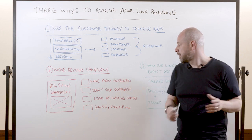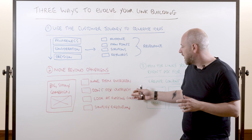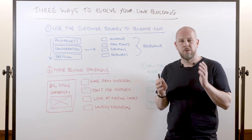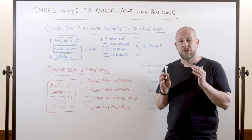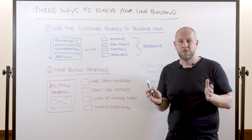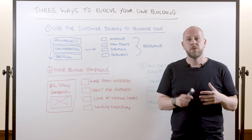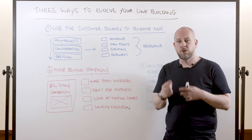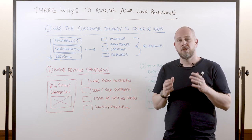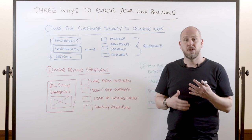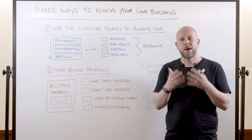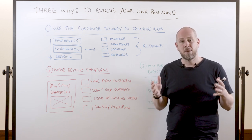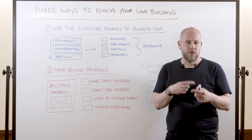Secondly, don't stop the outreach. Most SEOs will outreach a campaign and then stop once it's finished and move on to the next one. What you should be trying to do instead is create campaigns you can always outreach and always promote. Over time you build up multiple campaigns and multiple content pieces, ending up with a large bank of content that you can continually outreach and get links to.